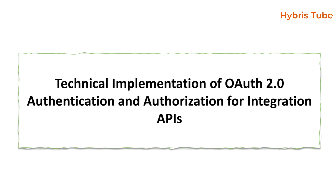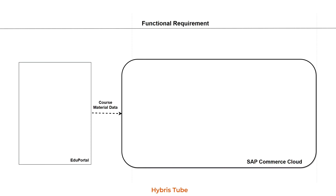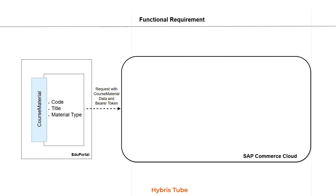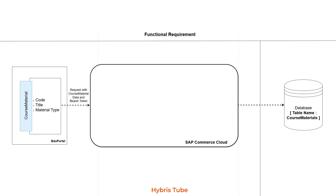Let's understand OAuth2 authentication and authorization with a practical example. Let's assume Azure portal sends course material data into SAP Commerce. Azure portal sends attributes like code, title, and material type — where material type can be video, PDF, slides, or link. In the Hybris system, we have a database table called course materials, and we will be saving all these attribute values into that table.